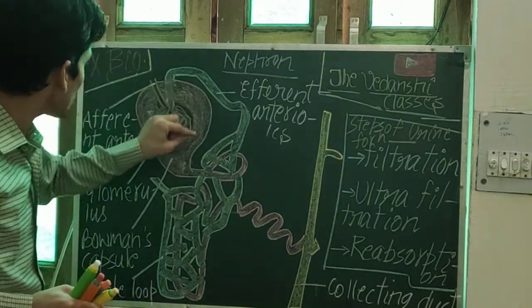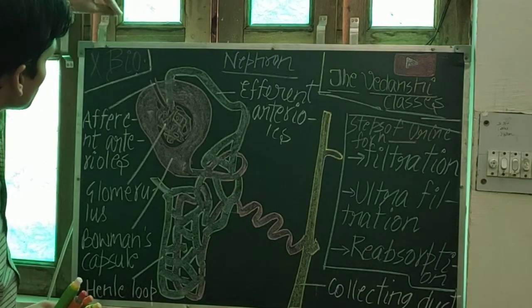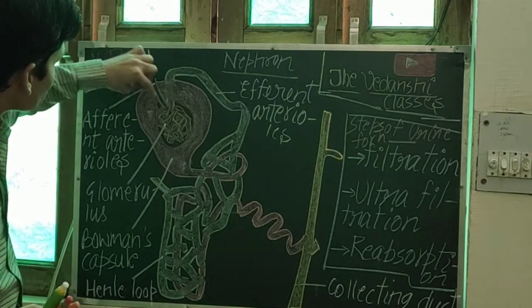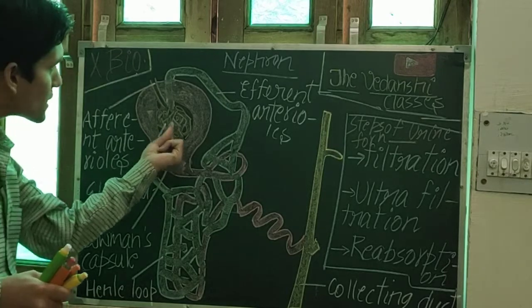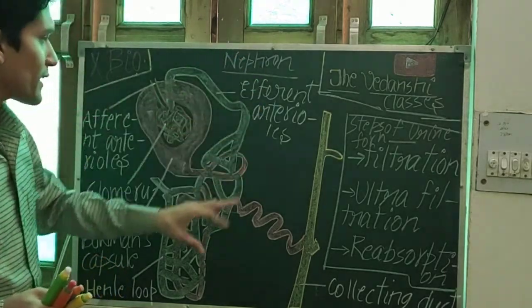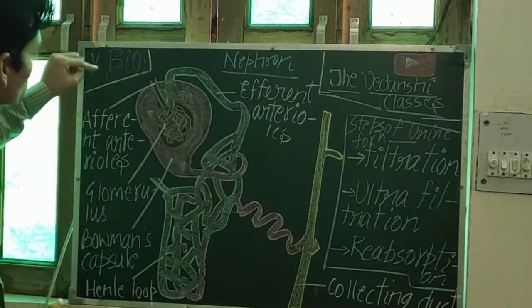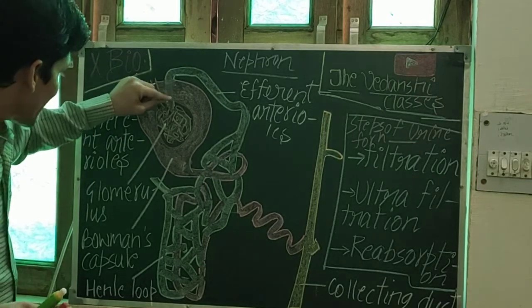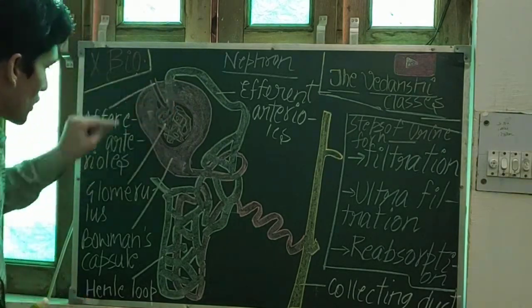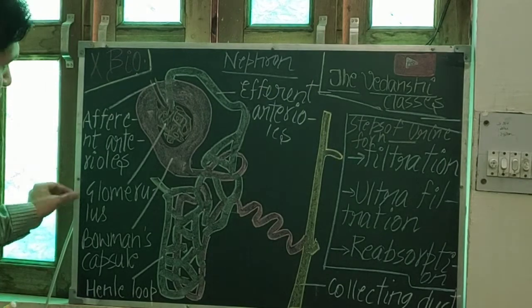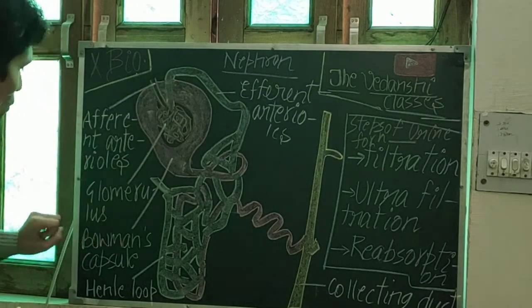In the Bowman capsule, there is a highly coiled structure that is the glomerulus. And the glomerulus is located inside the Bowman capsule.